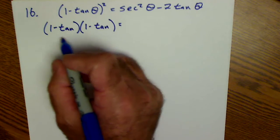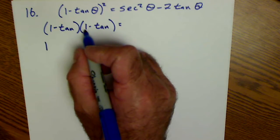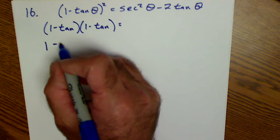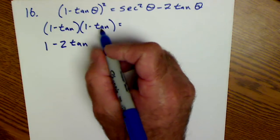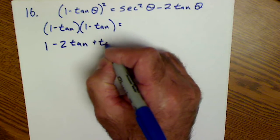My first terms, FOIL first. 1 minus tan, minus tan, so minus 2 tan of theta. Negative tan times negative tan is plus tangent squared of theta.